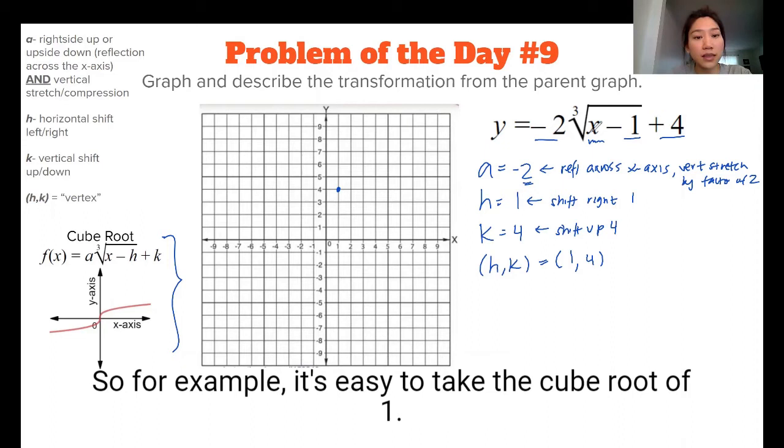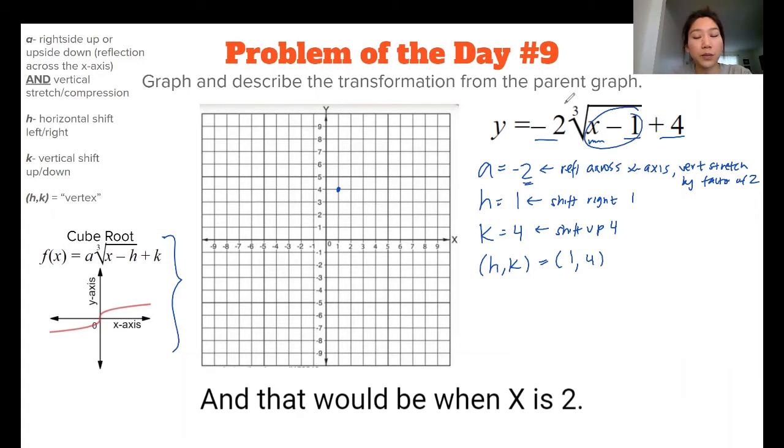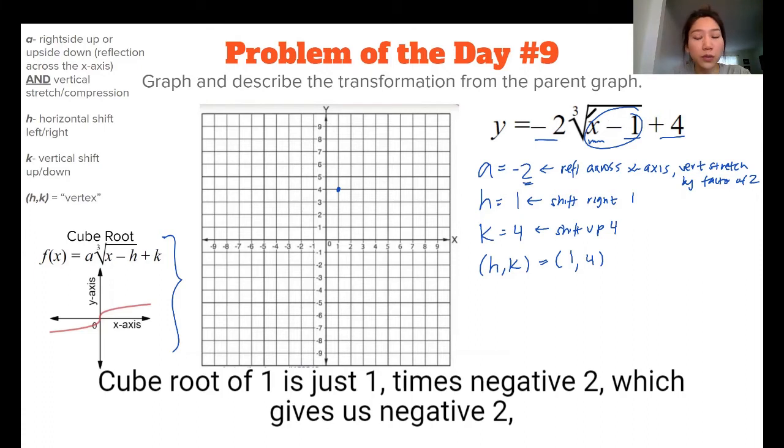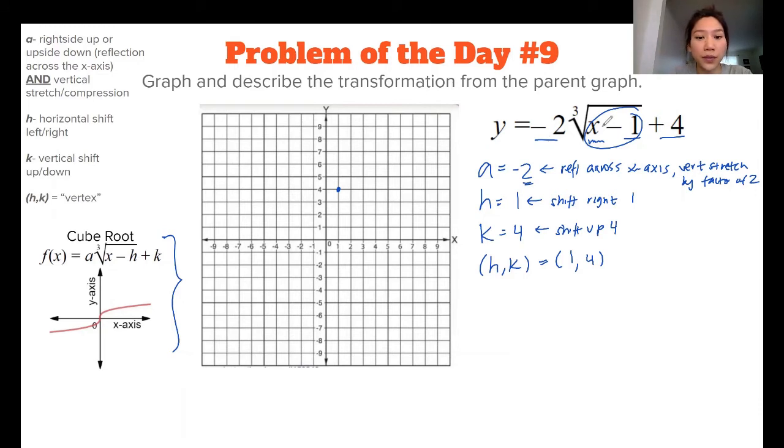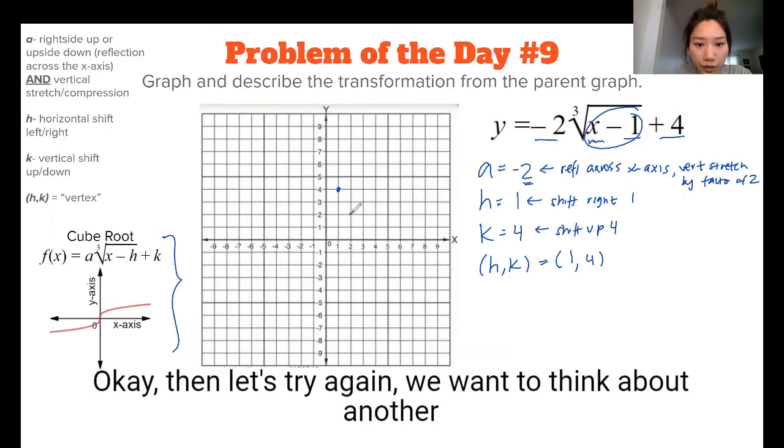So for example, it's easy to take the cube root of 1. So what value of x is going to give us 1 inside of the cube root? And that would be when x is 2. So when x is 2, then when we subtract 1, that'll be 1. Cube root of 1 is just 1, times negative 2, which gives us negative 2, and then plus 4 gives us positive 2. So when our x was 2, that gave us a y value of positive 2.